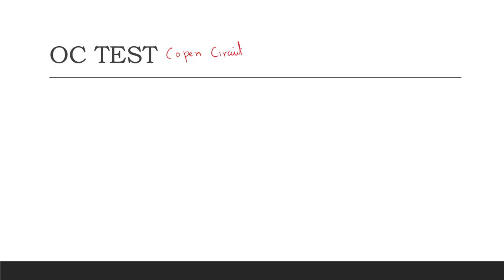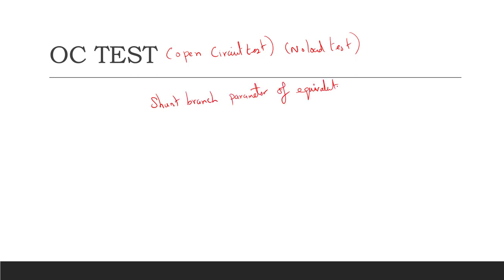We are going to discuss initially what is OC test. OC test is nothing but open circuit test, also called the no-load test. This test will be conducted when the load is zero. In OC test we are going to find out the corresponding shunt branch parameter of the equivalent circuit, and also we are going to find out the core losses of the system.